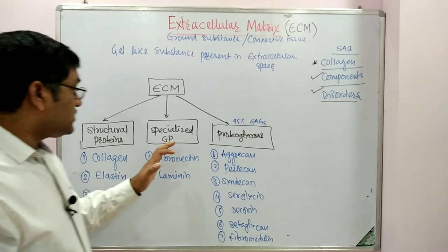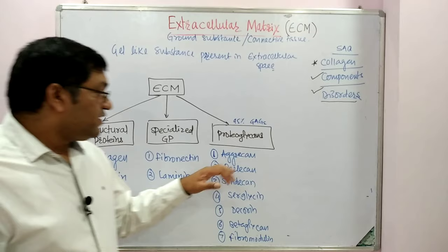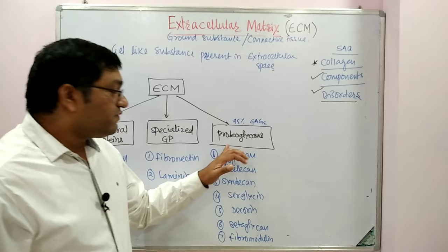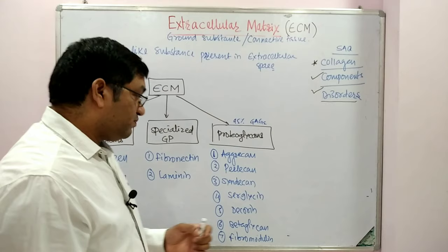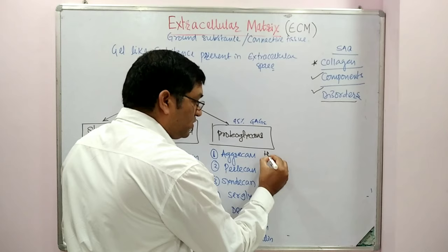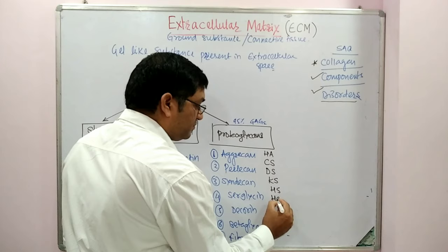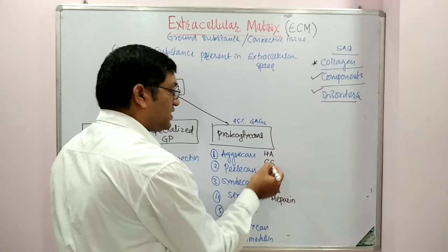Specialized glycoproteins are fibronectin and laminin. Various proteoglycans include aggrecan, perlecan, syndecan, serglycine, decorin, fibromodulin, and betaglycan. Various glycosaminoglycans responsible for formation of proteoglycans include hyaluronic acid, chondroitin sulfate, dermatan sulfate, keratan sulfate, heparan sulfate, and heparin.